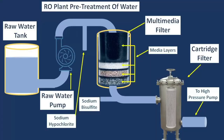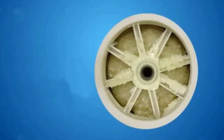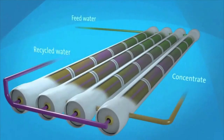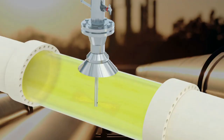Number 4 is Antiscalant. Antiscalant is used to prevent scaling in the RO membranes and is highly effective for this purpose. Before the feed water enters the reverse osmosis membrane, antiscalant is injected into the water.